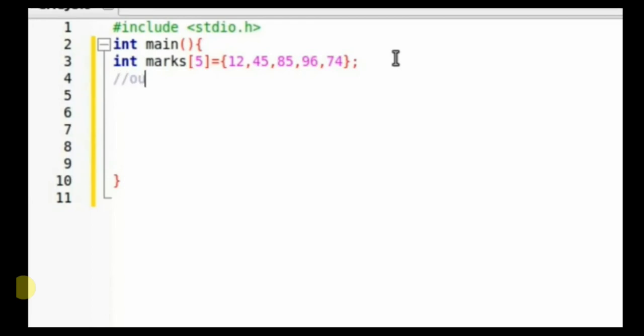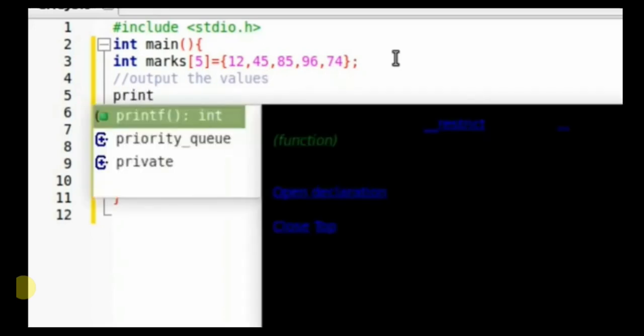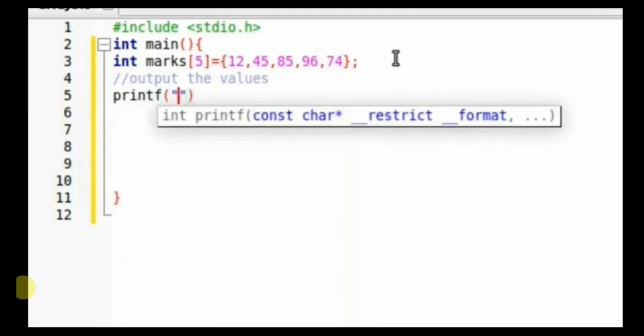After having assigned that, now we can look at how we can output the values that have been assigned to this particular array. We can use printf. Inside our printf, you can specify exactly the data you're going to output. Let's assume if we are going to fetch the third element.